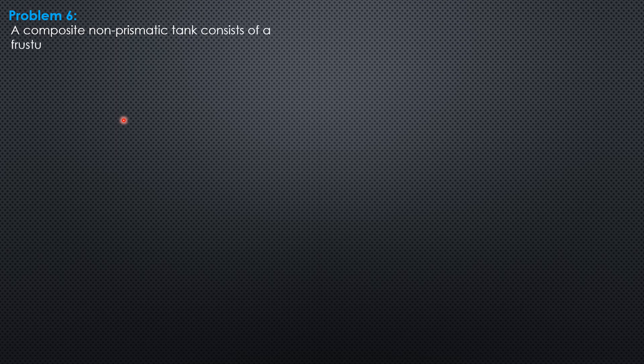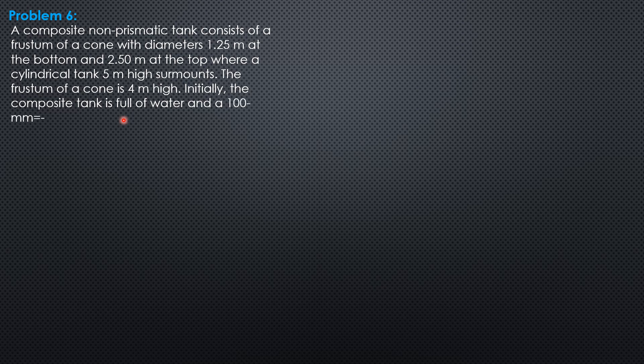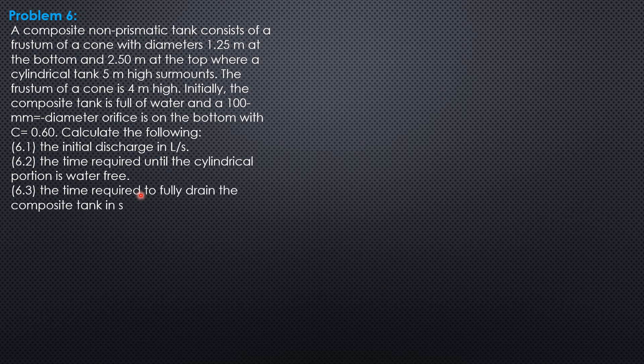A composite non-prismatic tank consists of a frustum of a cone with diameters 1.25 meters at the bottom and 2.5 meters at the top where a cylindrical tank 5 meters high surmounts. The frustum of a cone is 4 meters high. Initially, the composite tank is full of water and 100 mm in diameter. A 100 mm diameter orifice is at the bottom with coefficient of discharge 0.6.